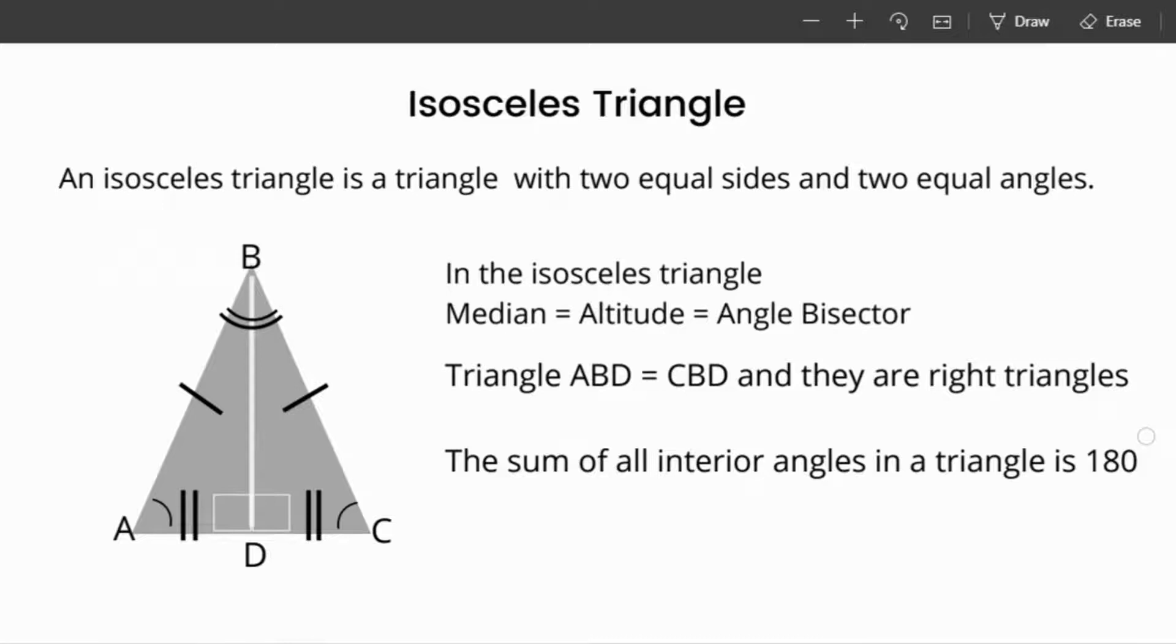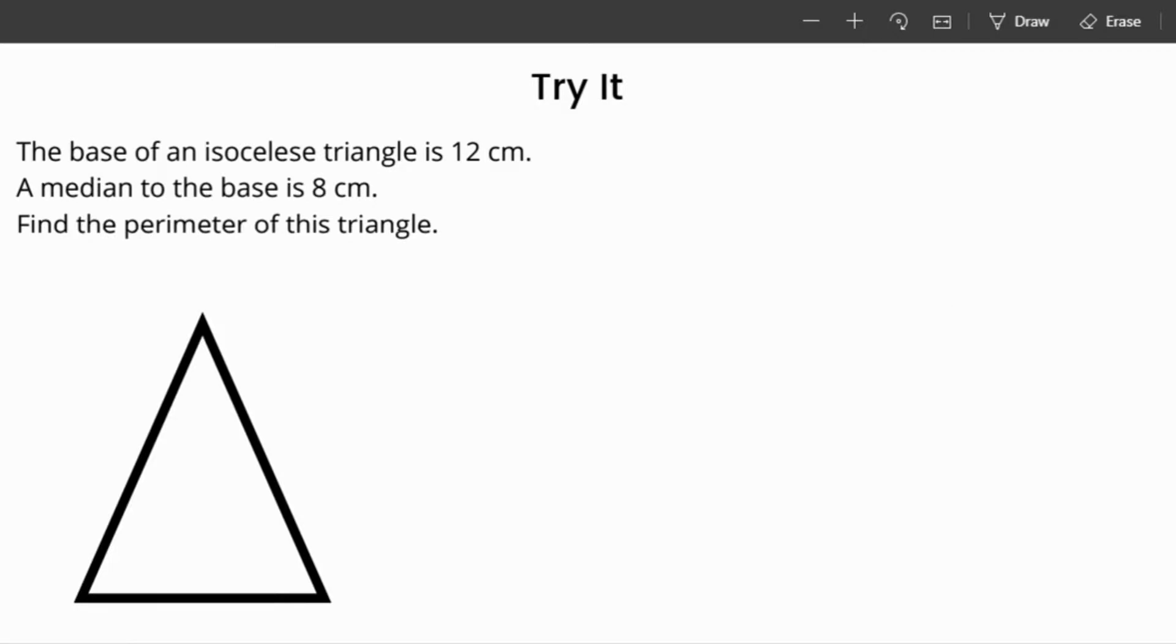The sum of all interior angles in any triangle is 180 degrees. The base of an isosceles triangle here is 12 centimeters. A median to the base is 8 centimeters. Find the perimeter of this triangle.